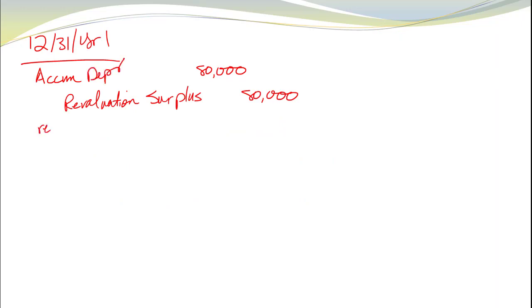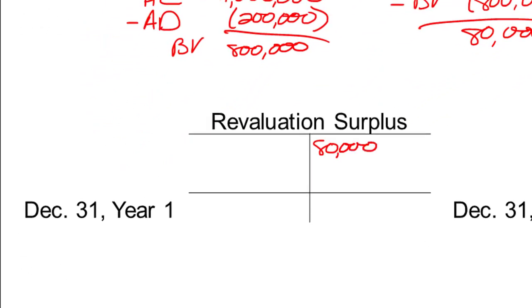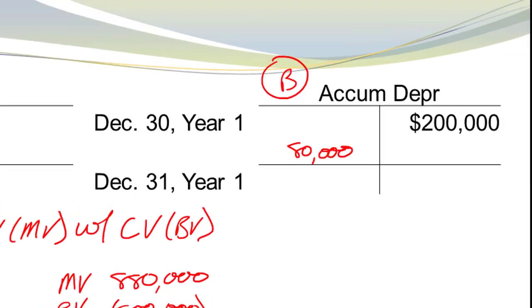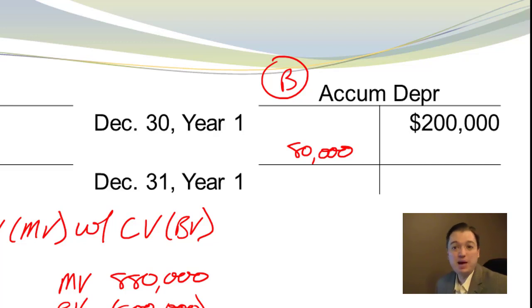Let's update our T-accounts. We credited revaluation surplus, giving us a new ending balance there. We debited accumulated depreciation, so $200,000 minus $80,000 gives a balance of $120,000 — but I can't finalize that yet because I still have depreciation expense to record. So I'll leave the $80,000 debit noted but hold off on the ending balance until after the depreciation expense entry.